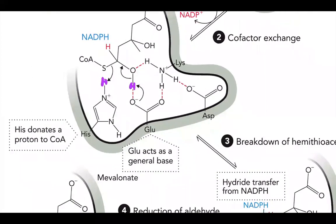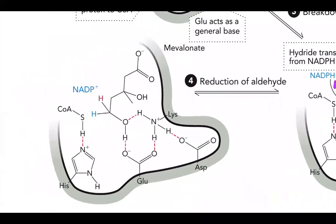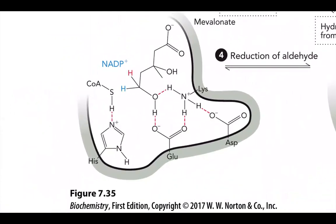Moving to the next step: we have now broken our original substrate. We had that hydride transfer — we added another hydrogen from another NADPH. Now that we've broken the bond, our glutamate is going to act as a general acid again and transfer this hydrogen back to our substrate. Now we get our reduction of our aldehyde occurring, with that additional hydrogen being attached. So now we have our two products: CoA and mevalonate.